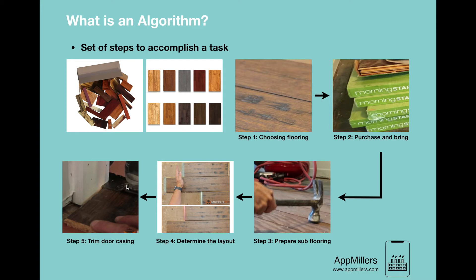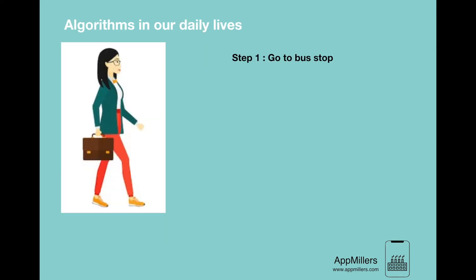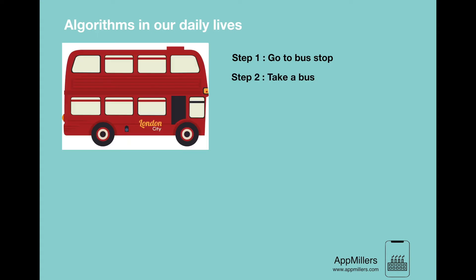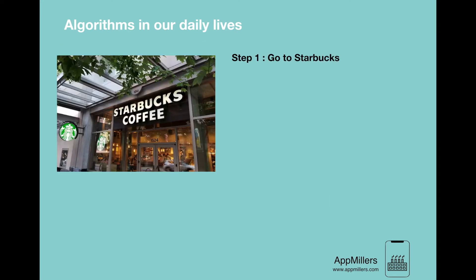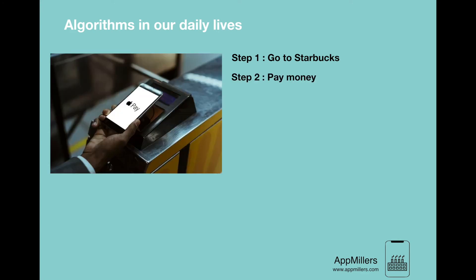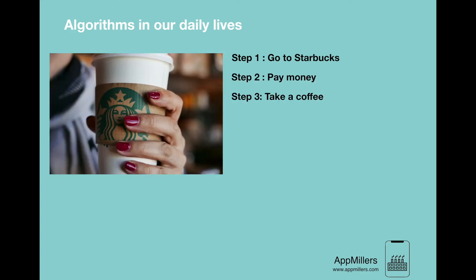Every day during our daily lives we use algorithms to execute our duties. You might have an algorithm for getting from home to work: first you go to the bus stop, then take the bus, then go to the office. Or for buying a coffee from Starbucks you go to Starbucks, pay for the coffee, and get the coffee. The tasks that we perform during the day are all algorithms.